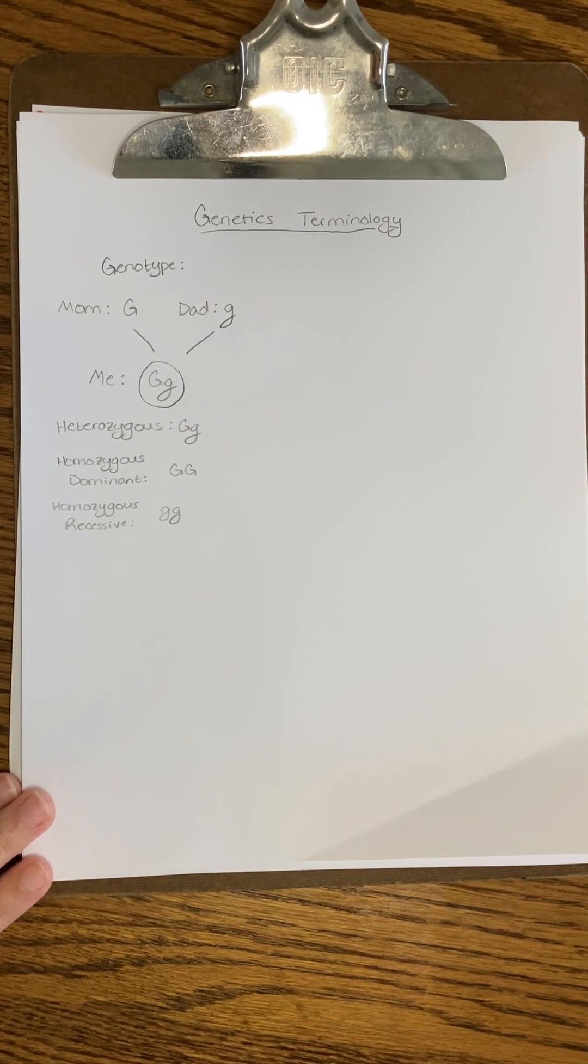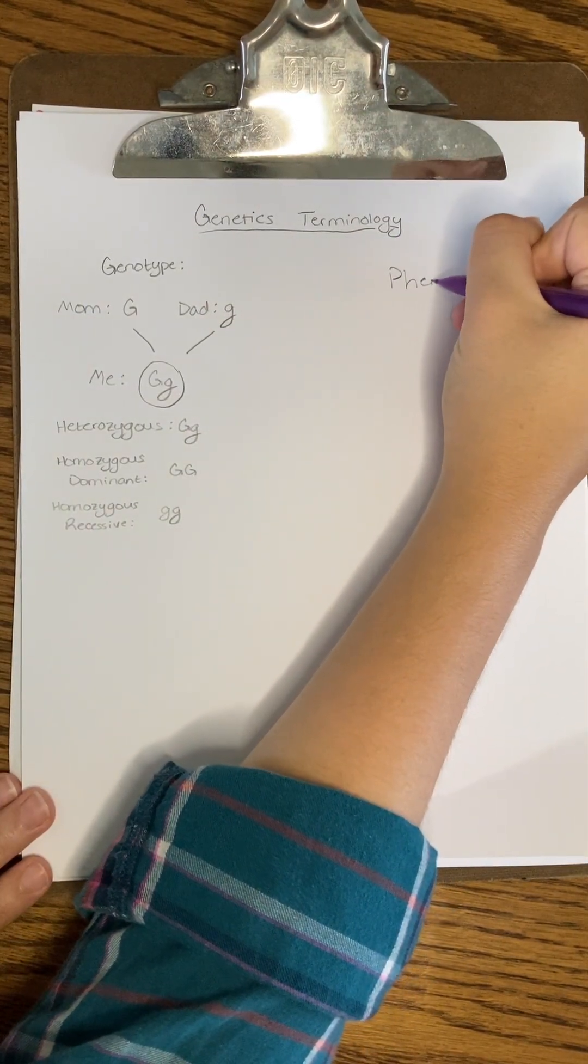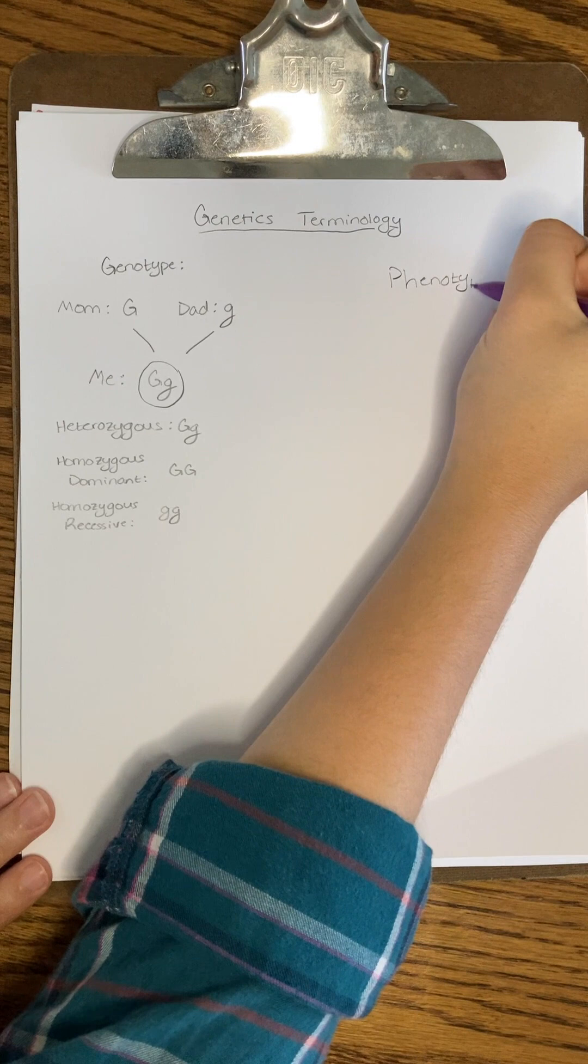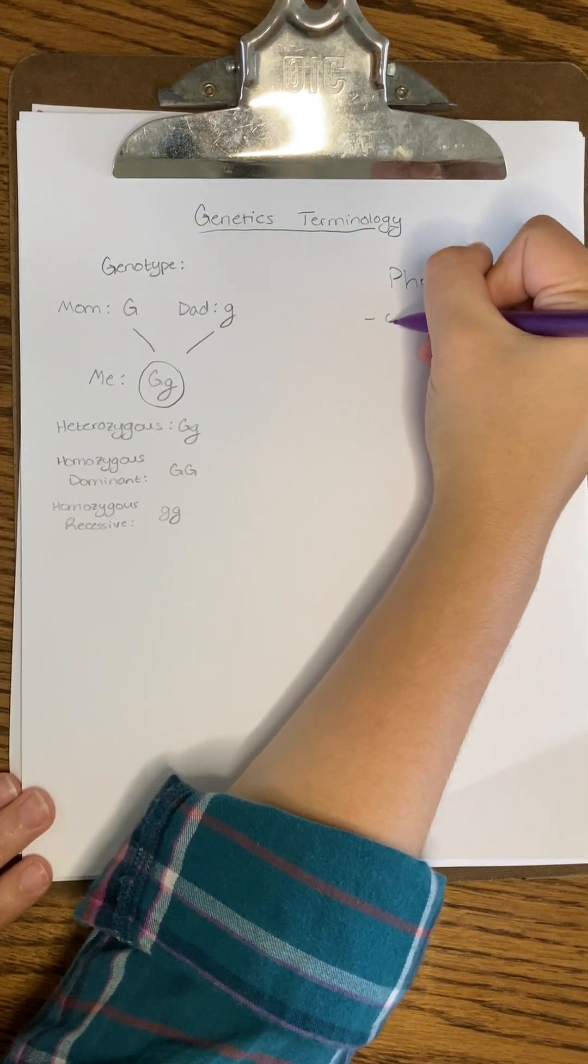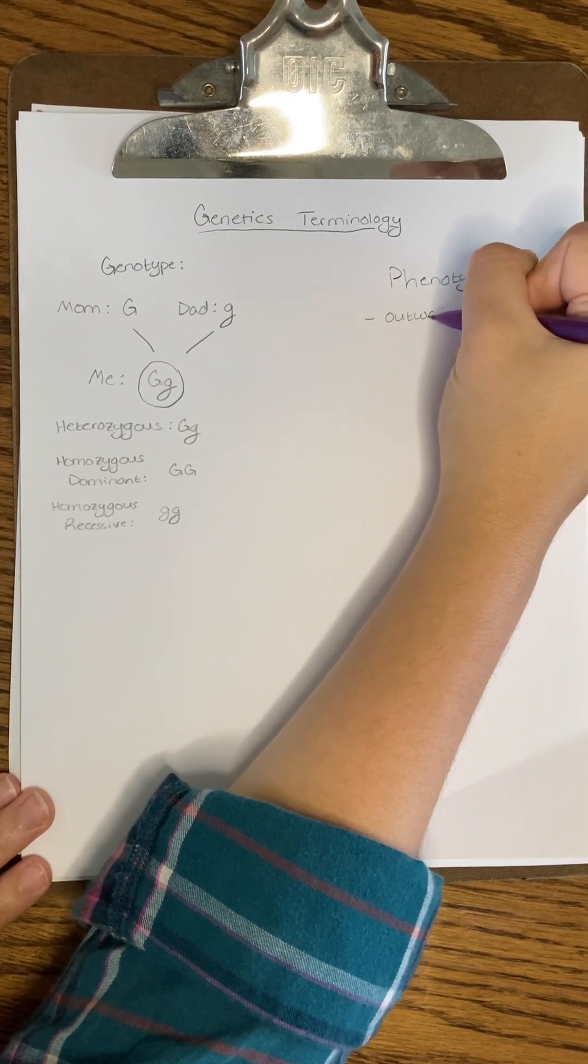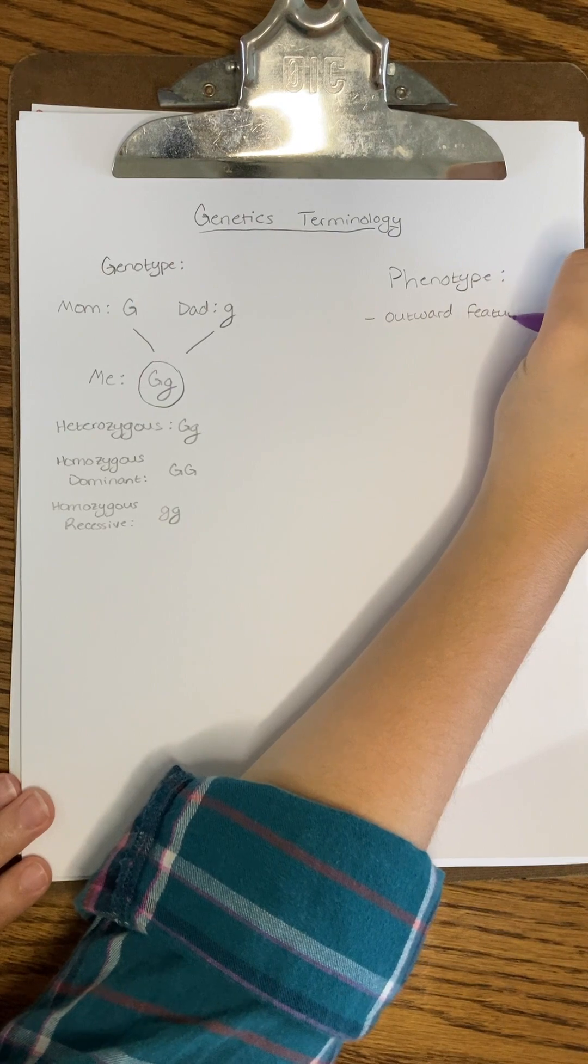Remember, only one dominant allele needs to be present for a trait to show up in the phenotype, so I would have brown hair if I was heterozygous for this trait, or homozygous dominant for this trait. A phenotype is the observable outward feature that an organism displays, like brown hair or blue eyes.